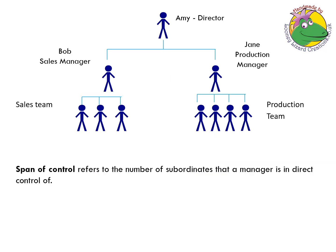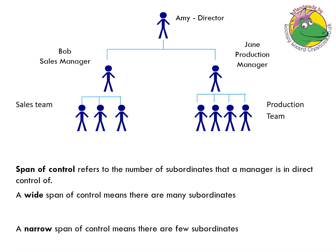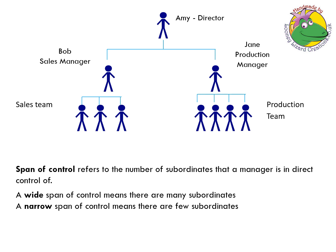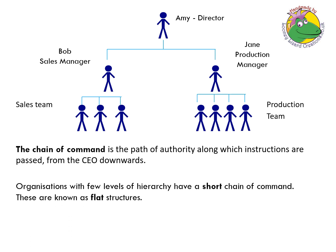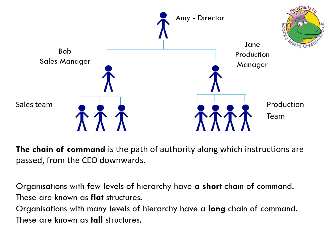Span of control refers to the number of subordinates that a manager is in direct control of. A wide span of control means there are many subordinates, and a narrow span of control means there are few subordinates — so here Jane has a wider span of control than Bob. The chain of command is the path of authority along which instructions are passed down from the CEO. Organizations with few levels of hierarchy and short chains of command are known as flat structures, whereas those with many levels and long chains of command are known as tall structures.